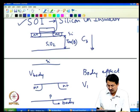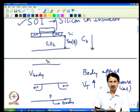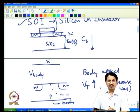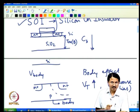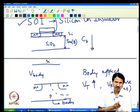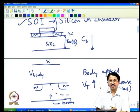Body effect means VT increases when VB is reverse biased. When reverse bias is applied, depletion width also increases, and increased depletion width decreases depletion capacitance. As a result, at different body biases you see variation in sub-threshold slope: at zero body bias you may get 100 mV/decade, but as body bias increases it comes down to 95, 90 mV/decade, and so on.